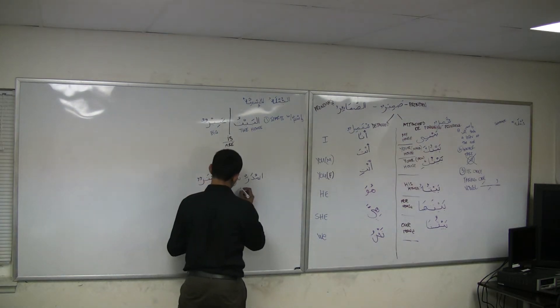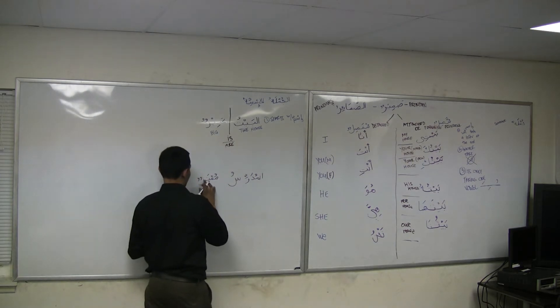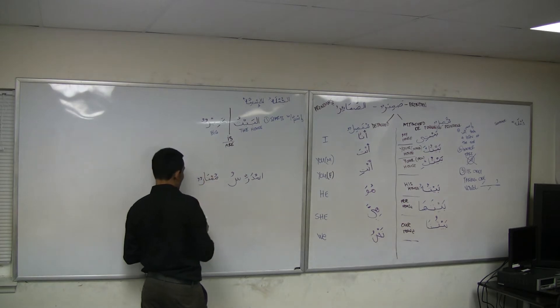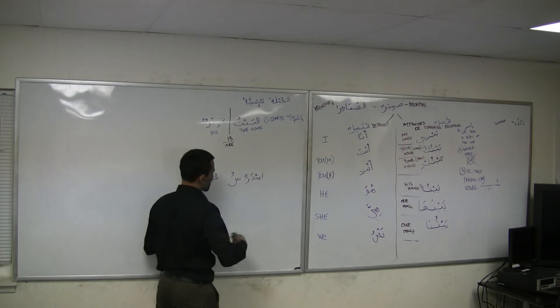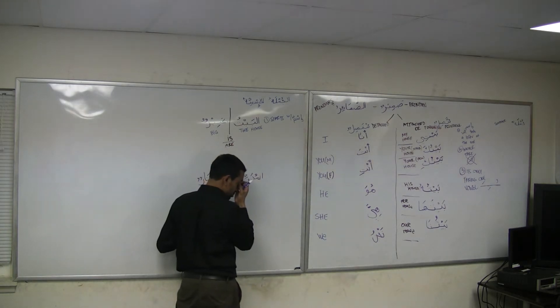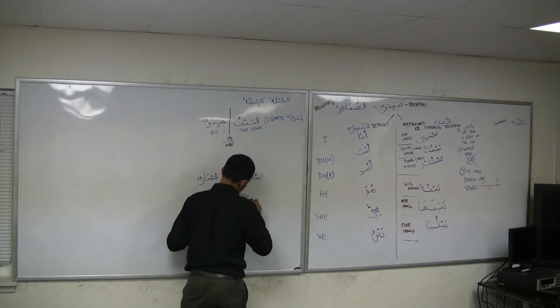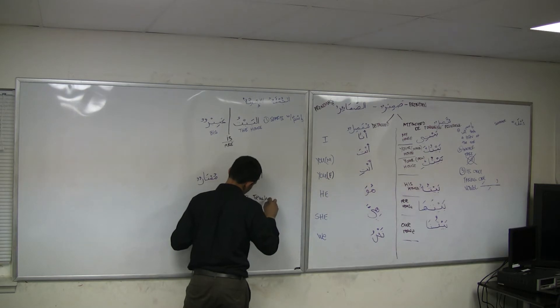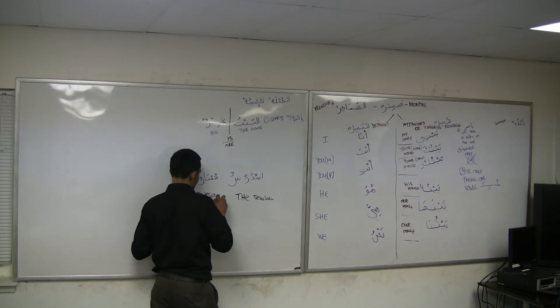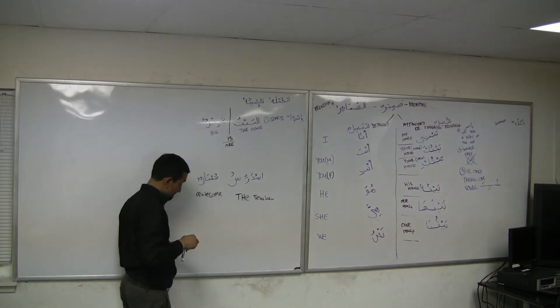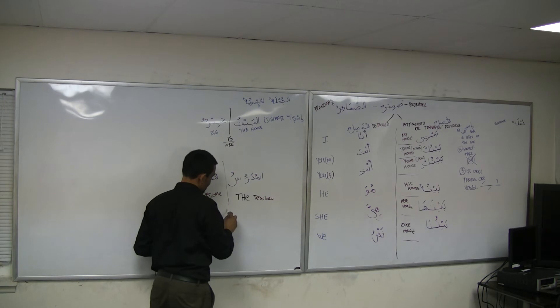What does that mean? Mumtaz means awesome or best. Al-mudarrisu means the teacher. What does mumtaz mean? Awesome. So say the whole sentence for me in English. The teacher is awesome. Where is 'is'? Implied.